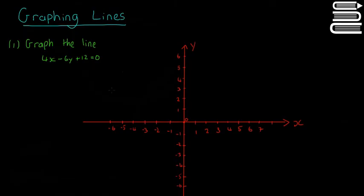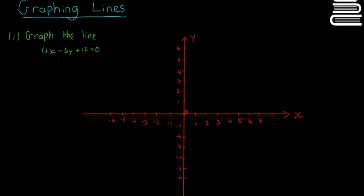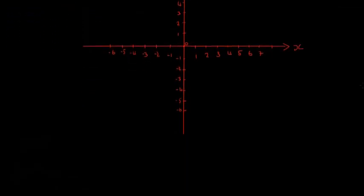And this is the quickest method to do it. So all you need is two points, and you can draw the line. So 4x minus 6y plus 12 is equal to 0. We need two points on this line if we want to draw it.